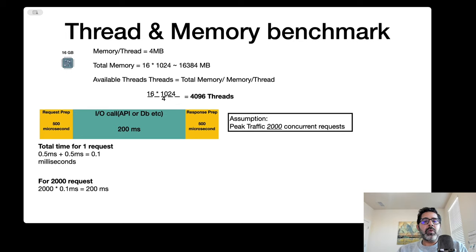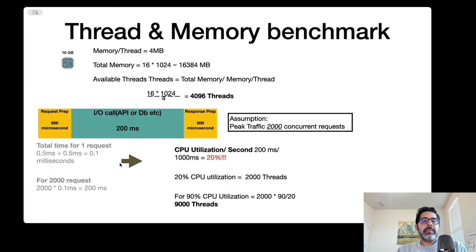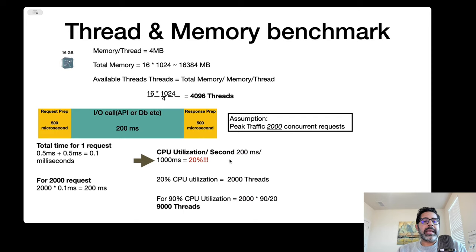Say I have a web application expecting peak traffic of 2,000 concurrent requests. Thread preparation takes about 500 microseconds, so total time for one request is 0.1 millisecond. For 2,000 requests that becomes 200 milliseconds. My thread is blocked for 200 milliseconds, so the actual work done is only 200 milliseconds, meaning total CPU utilization per second is only 20%.